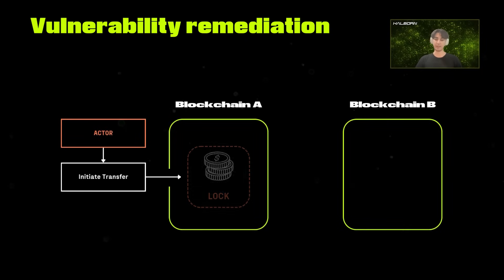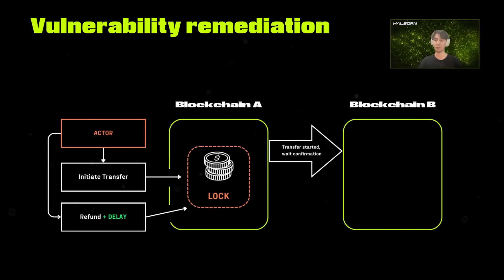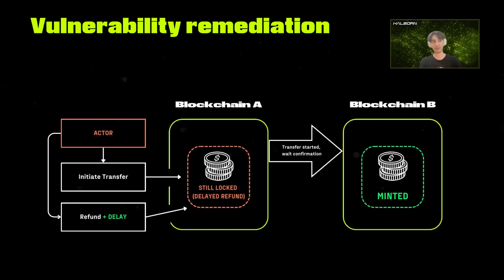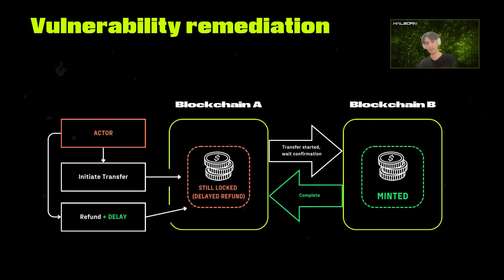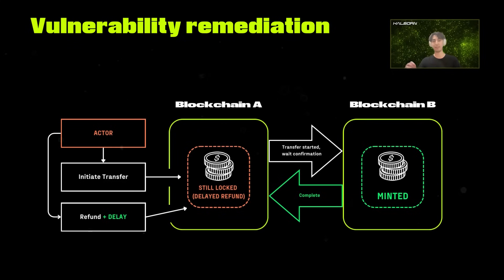What did we recommend to fix this? What was the remediation suggested? The essential remediation was to add a period of time — a buffer — between the locking of the assets on the source chain and the refund mechanism. For example, you would have to wait one day to be able to claim the refund. So it was to make sure there would be a back-and-forth information exchange between the source chain locking the event and the counterparty chain where the user either claimed or not. And if they claimed, the relayer would also bridge the event back to the source chain to say the user claimed, so they cannot get a refund. That buffer zone would just make sure that the relayer did his job properly.